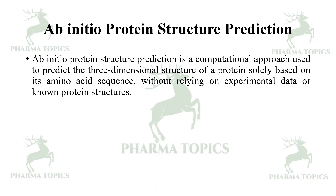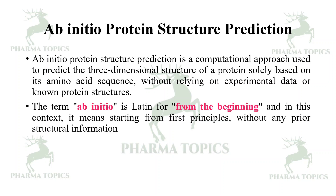Ab initio protein structure prediction is a computational approach to predict the three-dimensional structure of a protein solely based on its amino acid sequence, without relying on experimental data or known protein structures. The term 'ab initio' is Latin for 'from the beginning,' meaning starting from first principles without any prior structural information.